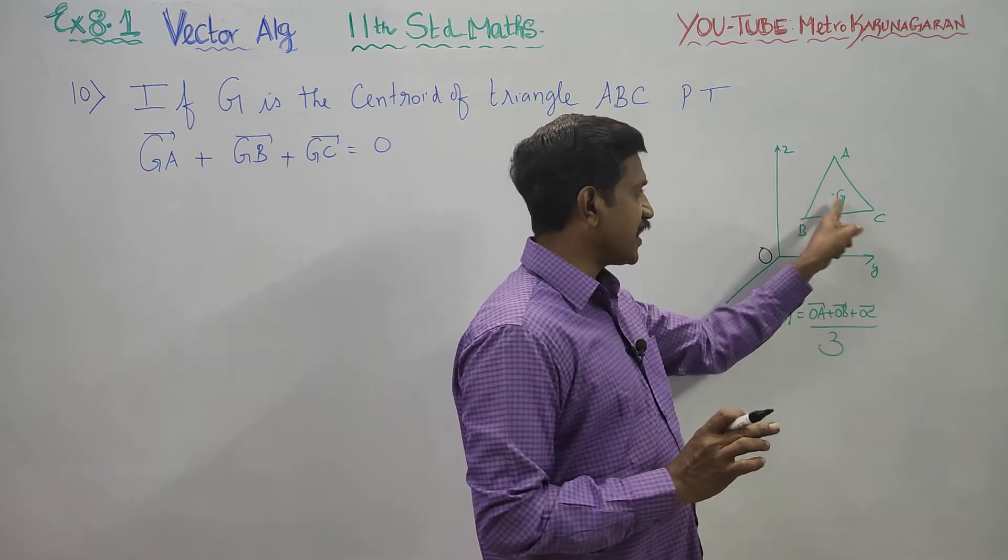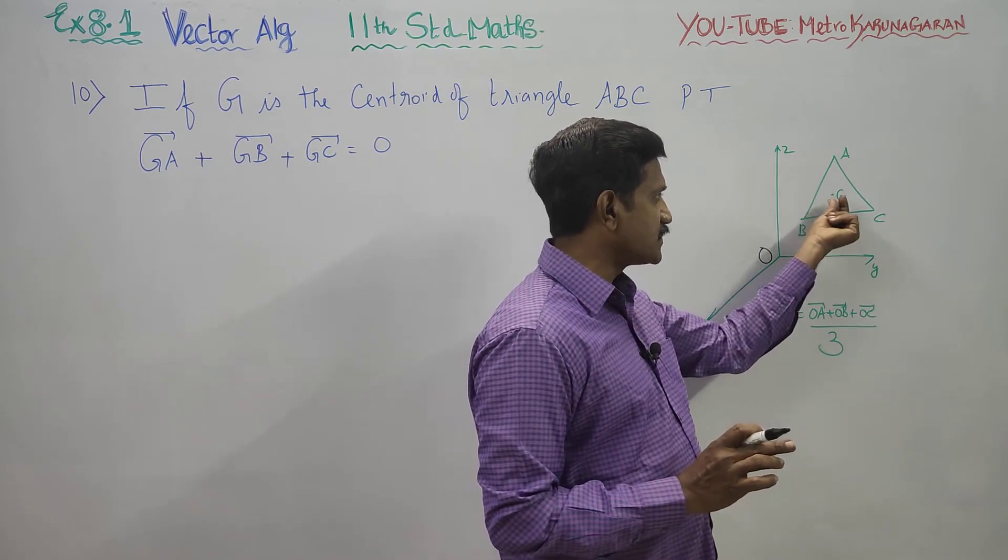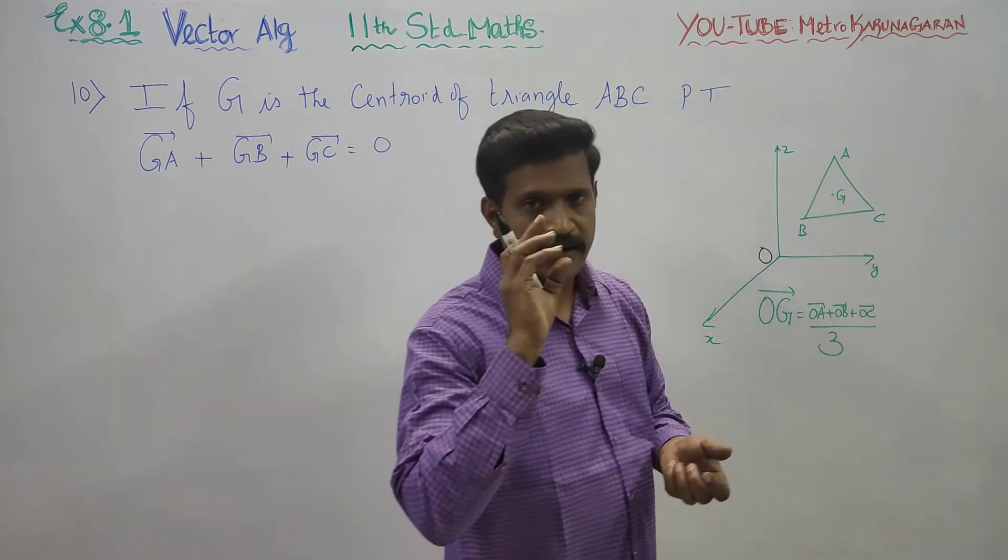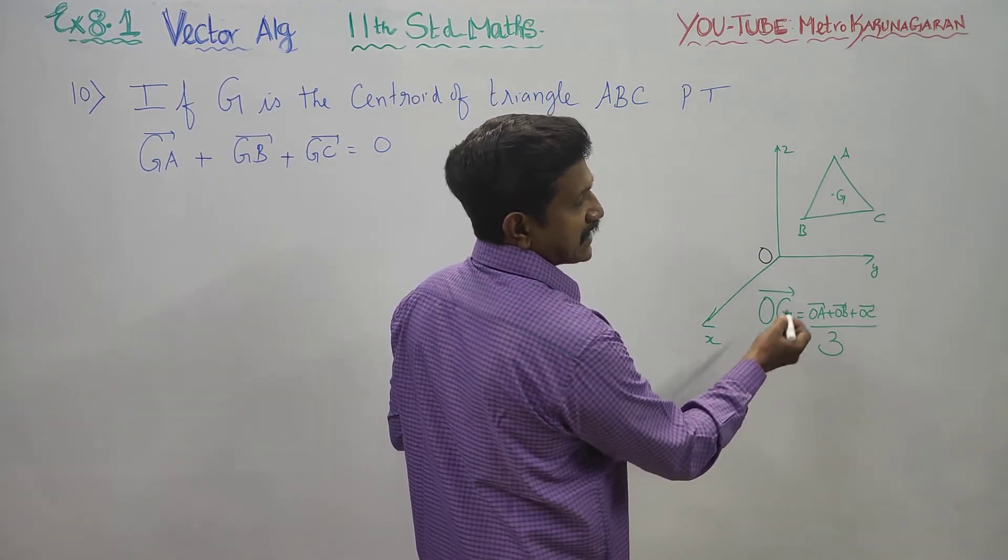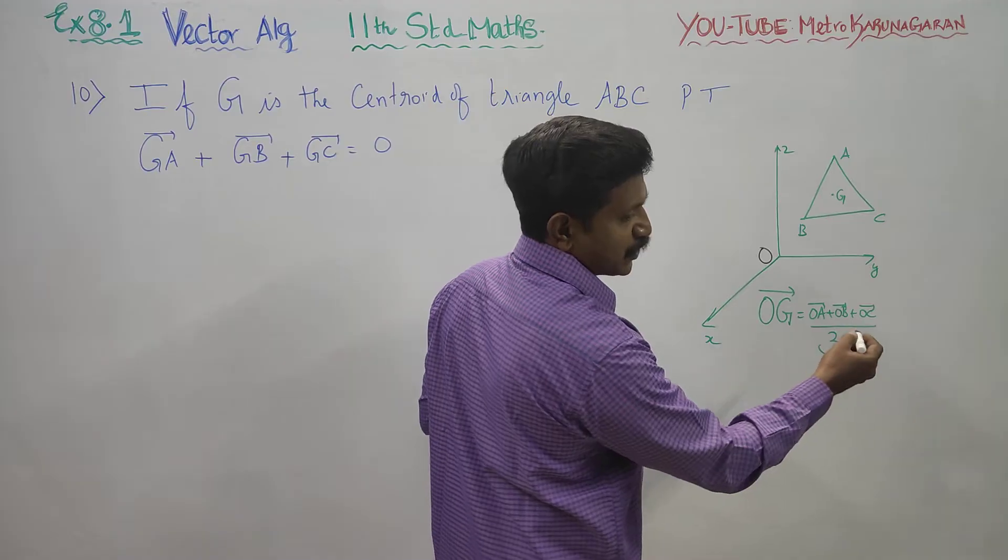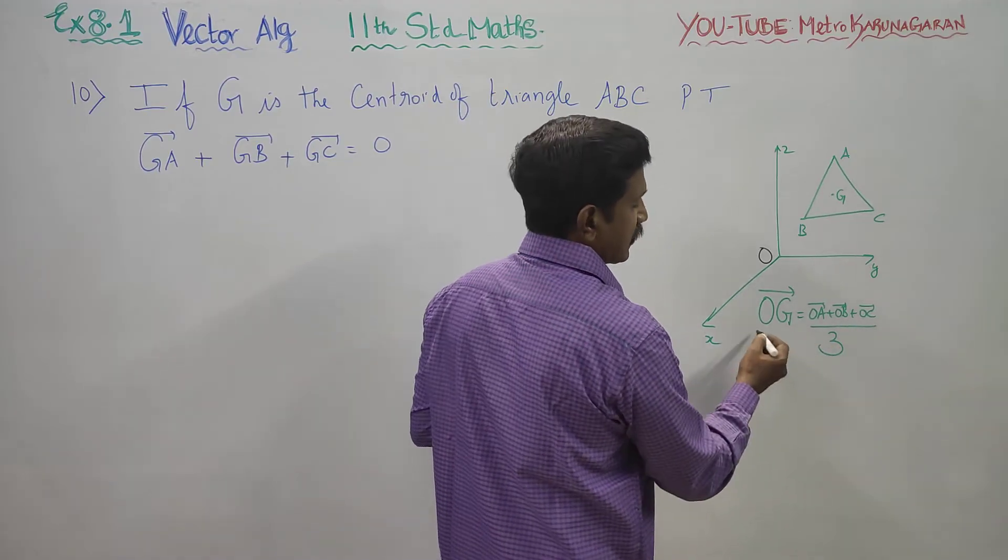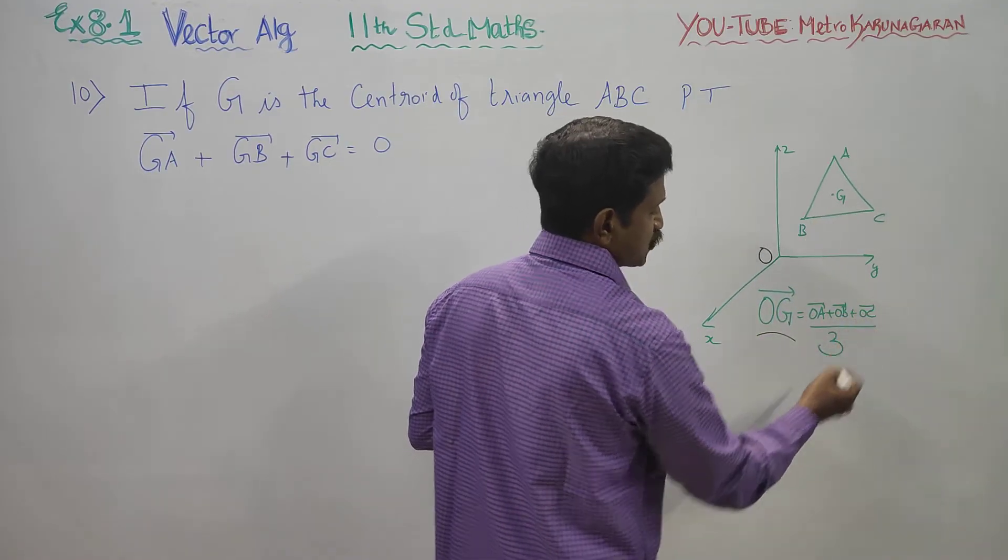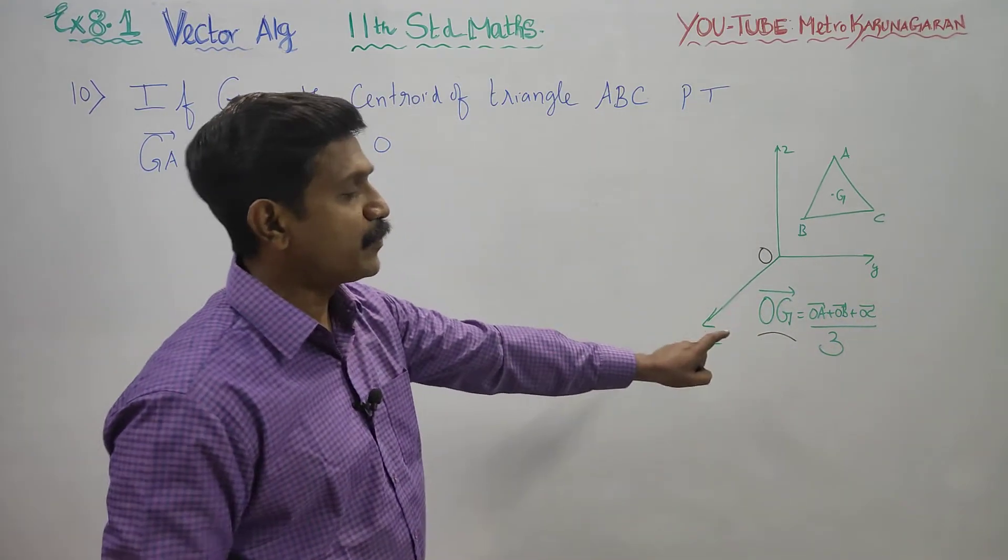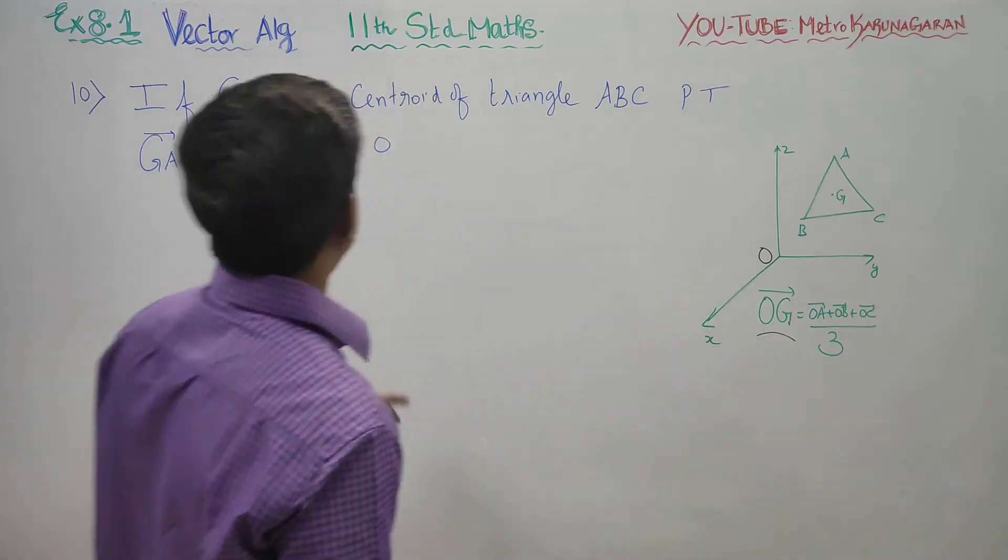For the centroid, G is the centroid point. The formula to find the position vector of the centroid is: OG vector equals OA vector plus OB vector plus OC vector, all divided by 3. This is the formula to find the centroid.